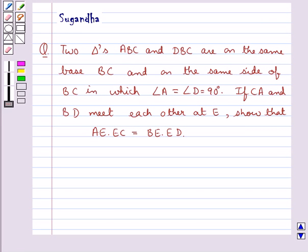Hello and welcome to the session. In this session we discuss the following question which says two triangles ABC and DBC are on the same base BC and on the same side of BC in which angle A equals angle D equals 90 degrees.